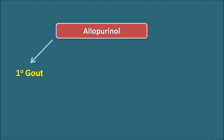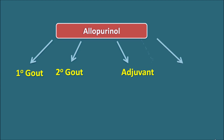Allopurinol can be used in various conditions: primary gout, where uric acid levels are excessively increased; secondary gout, where it is produced by any disease or disorder condition; as an adjuvant in cancer chemotherapy; and finally to control the calcium oxalate calculi that can form in the renal tubules.